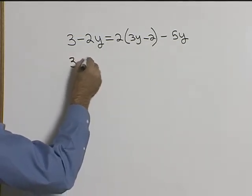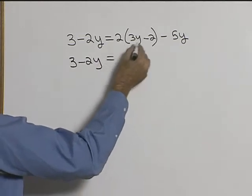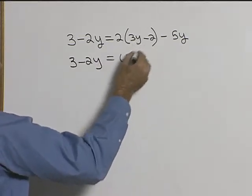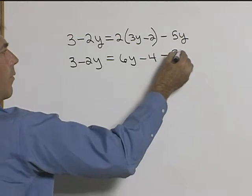So we'll rewrite the left hand side: 3 minus 2y equals 2. Distributing the 2 we'll get 6y minus 4 minus 5y.